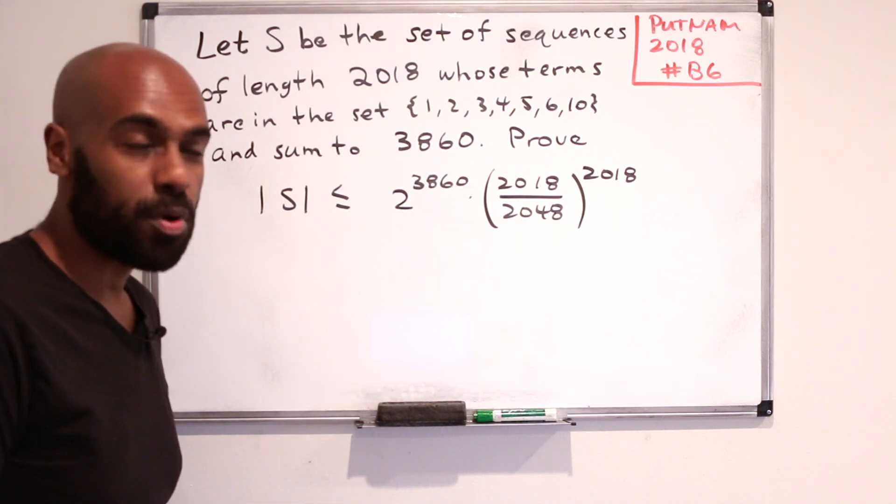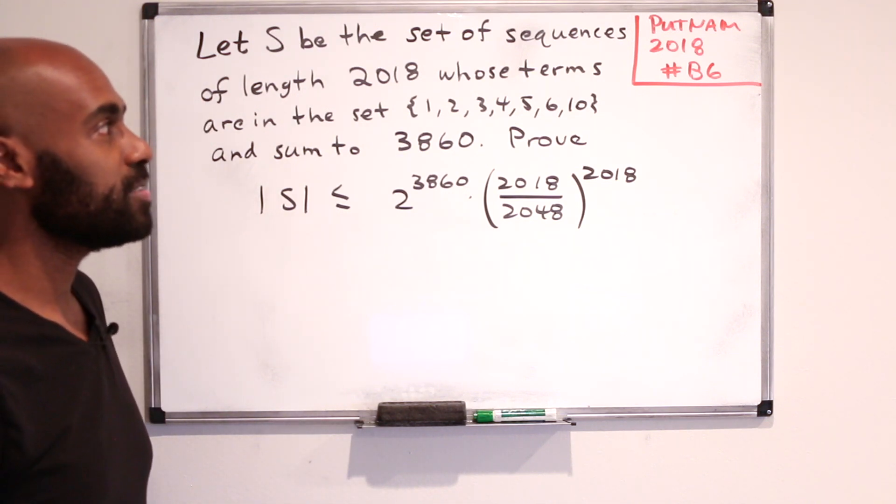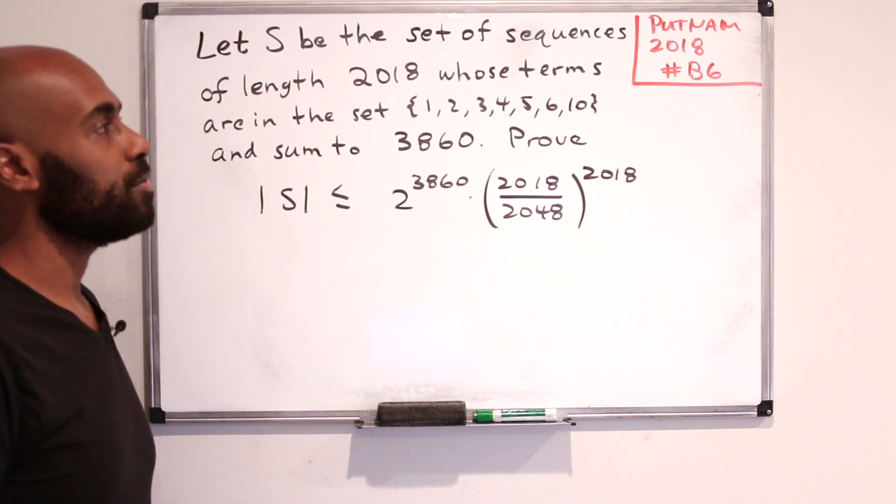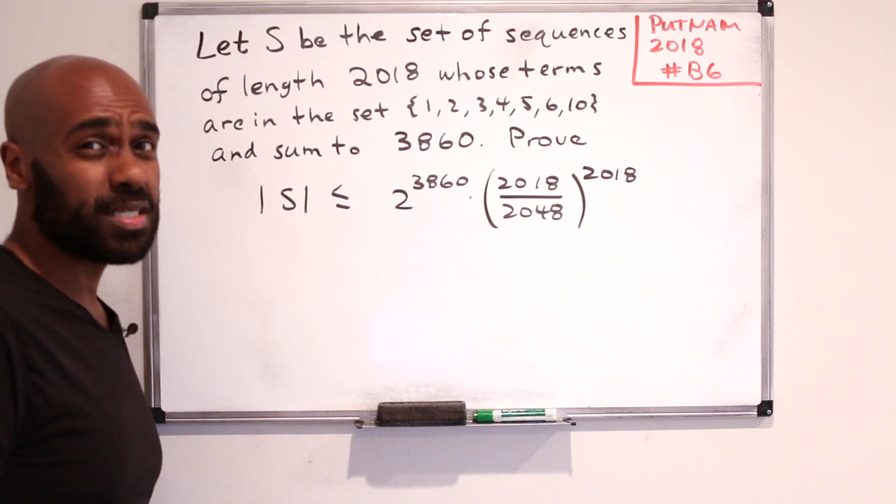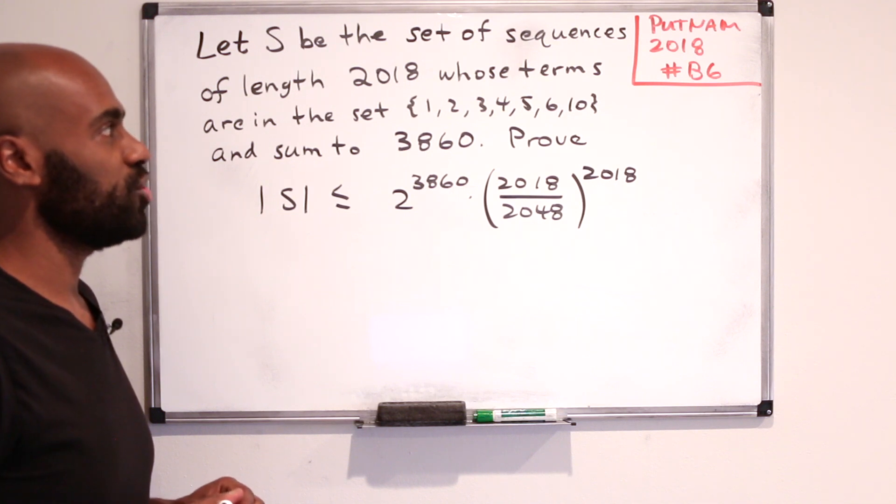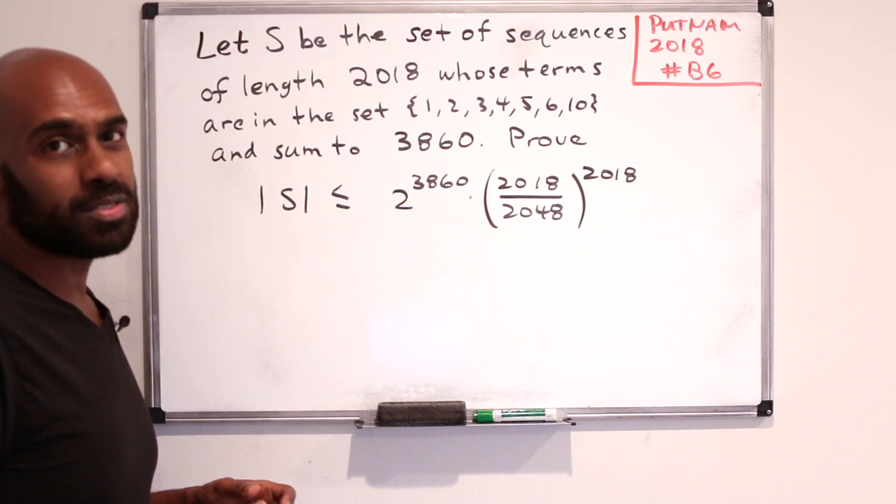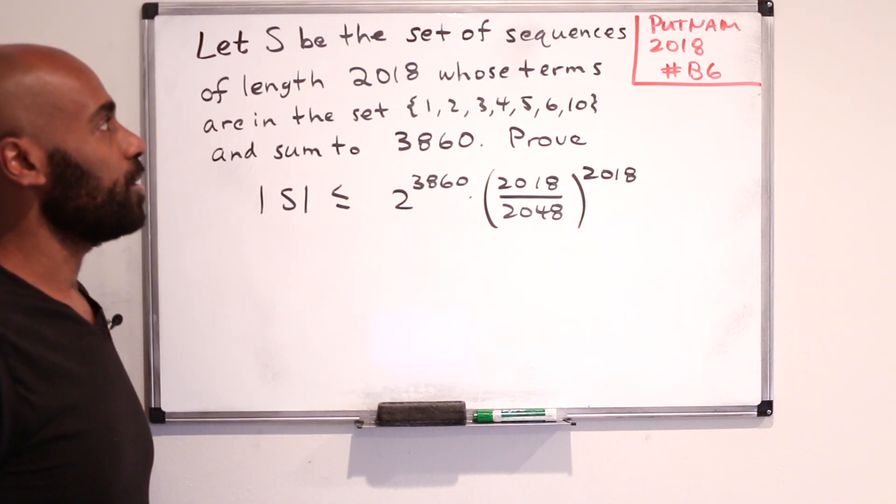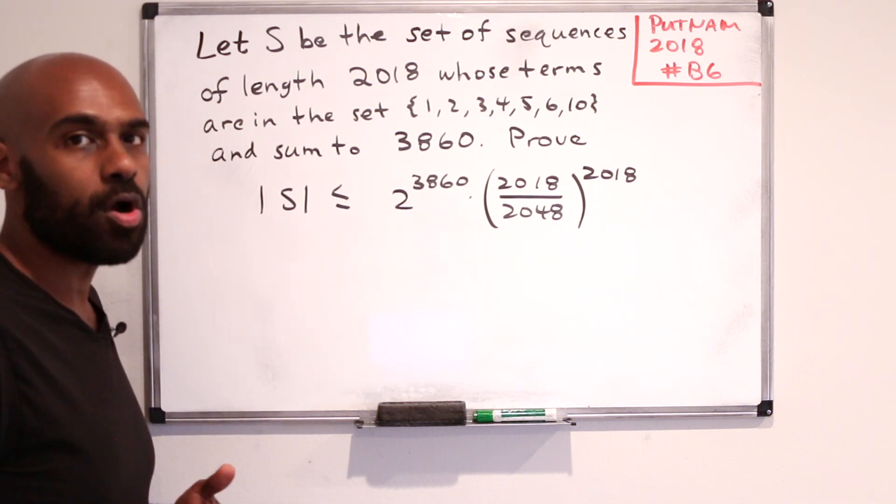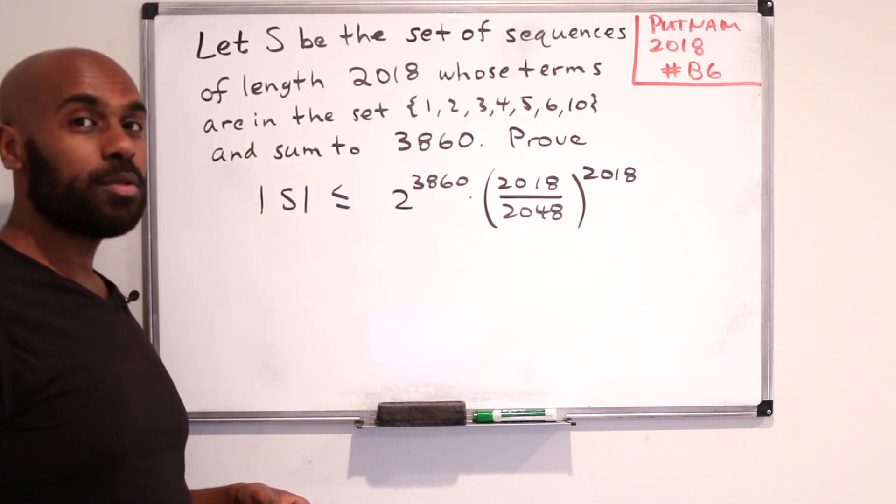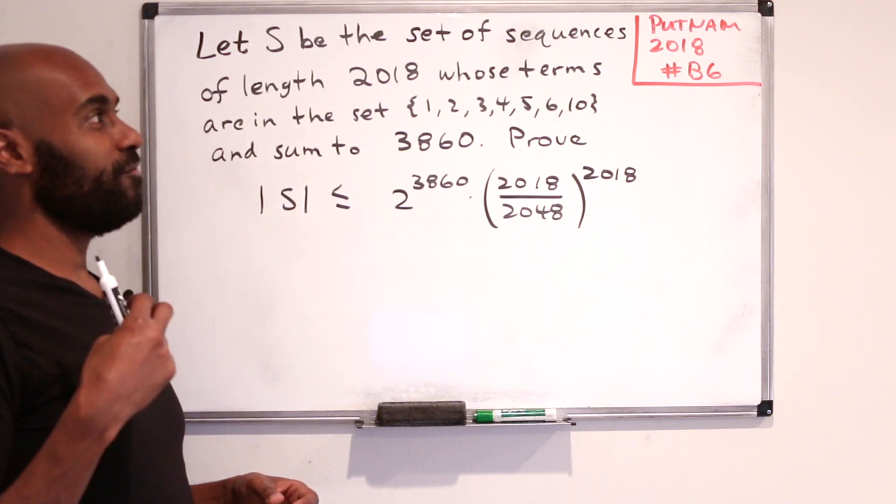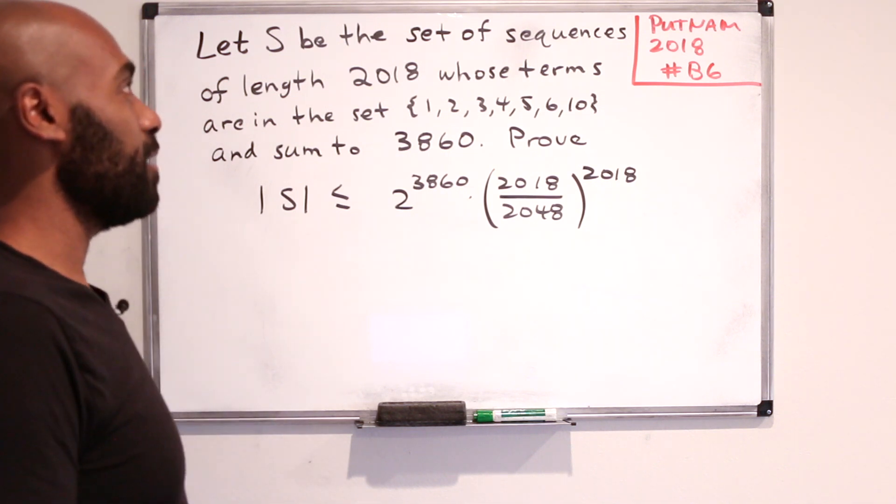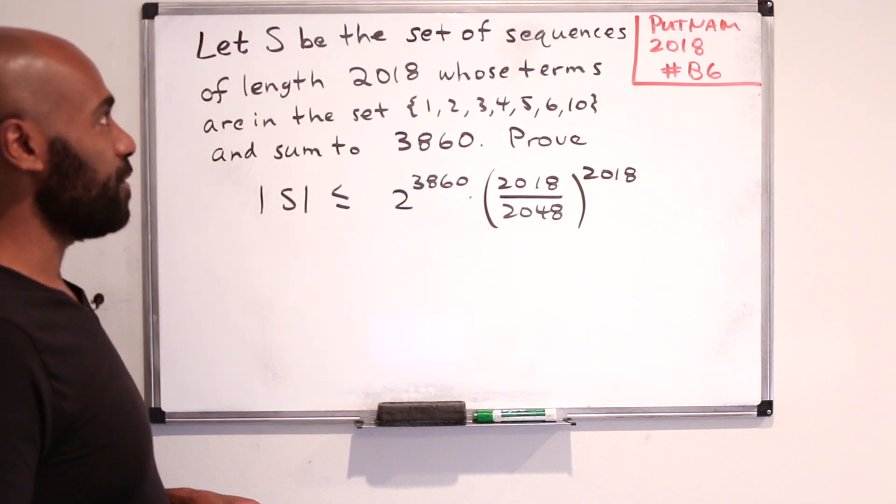Today we're going to discuss this problem that I like a lot. It's Putnam 2018 number B6. When you're actually taking the Putnam exam, questions like B6 tend to be quite difficult in general. People tend to be deterred from even trying this because you have five other problems you're looking at already and this one tends to be harder than the other ones even. But this problem happens to be a really fair problem if you have a particular type of background, particularly knowing a little bit about generating functions.